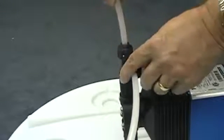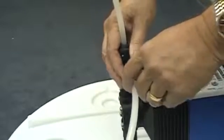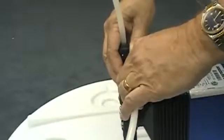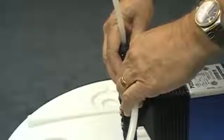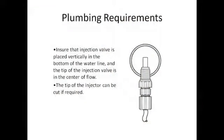To make connecting the tube easier, they may be warmed prior to placing them on the compression fittings. Ensure that the injection valve is placed vertically in the bottom of the water line and the tip of the injection valve is in the center of flow. The tip of the injector can be cut if required.